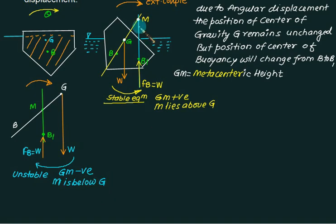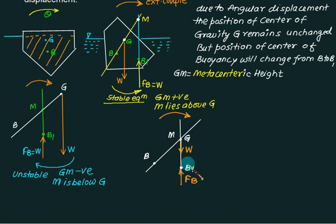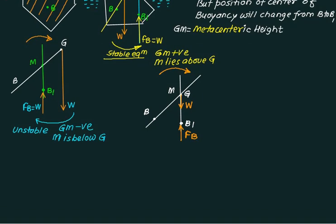In the final case, M and G coincide. B is the original center of buoyancy and B1 is the new one. When an angular displacement is given, W passes through G and the buoyant force passes through the new center of buoyancy. These two forces cancel each other, so the body gives no reaction to the external couple. The body simply adopts the new position — this is neutral equilibrium, where GM equals zero.